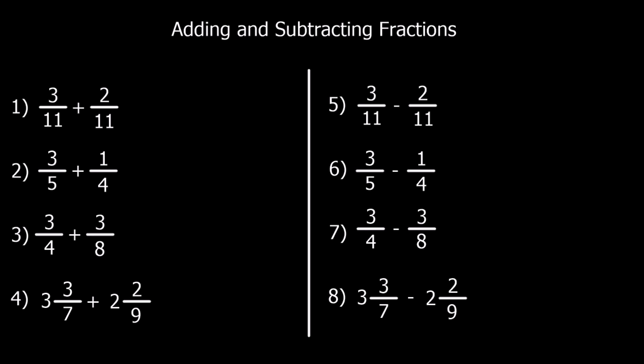Okay, here are some questions for you to try. Give them a go, and I'll go through the answers after. Okay, first one — we've got a common denominator already, so we don't have to do anything, we can just add them. So we've got 3 of them plus 2 of them, which is 5 of them, and they are 11ths. And 3 of them take away 2 of them is 1 of them, and they are 11ths.